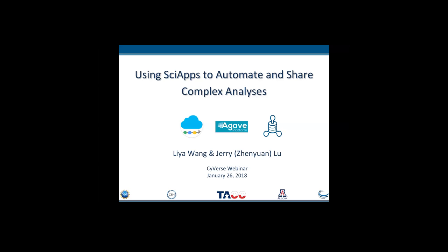I put a lot of logos on the first slide. The first logo is for SciApps. It uses the Agave platform to handle all the job analysis, and it uses a data commons — a data store for handling all the data storage. That's how SciVerse's whole infrastructure is built on top of them. SciVerse is a joint project with three main institutes, including Cold Spring Harbor Lab, TACC — Texas Advanced Computing Center — and University of Arizona, which is the headquarter of the SciVerse project. SciVerse is funded by the National Science Foundation for the Cyber Infrastructure Program.